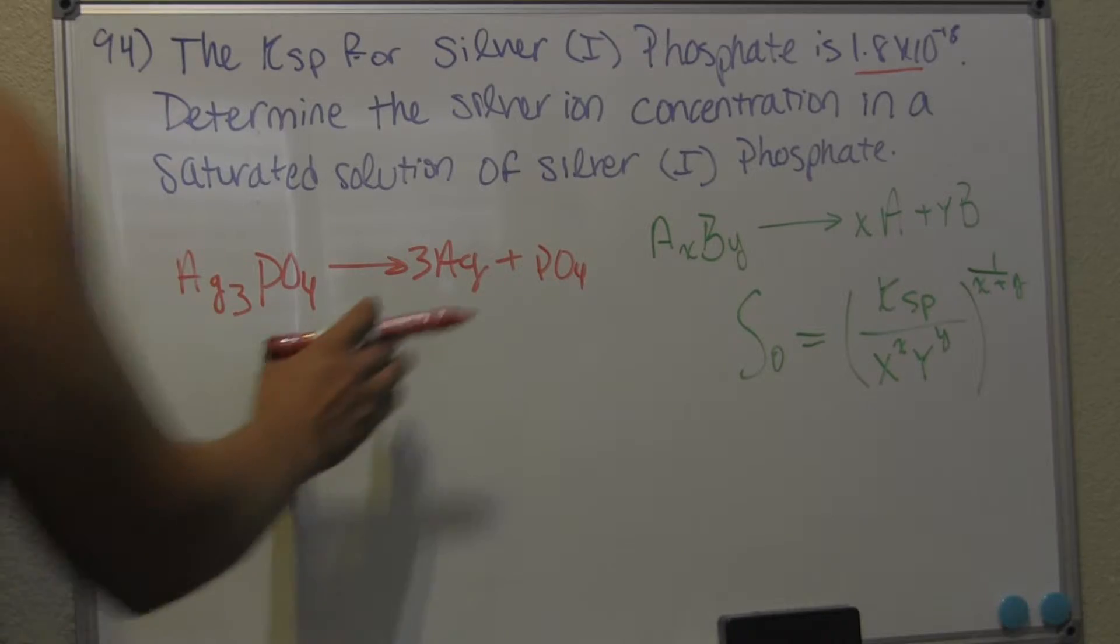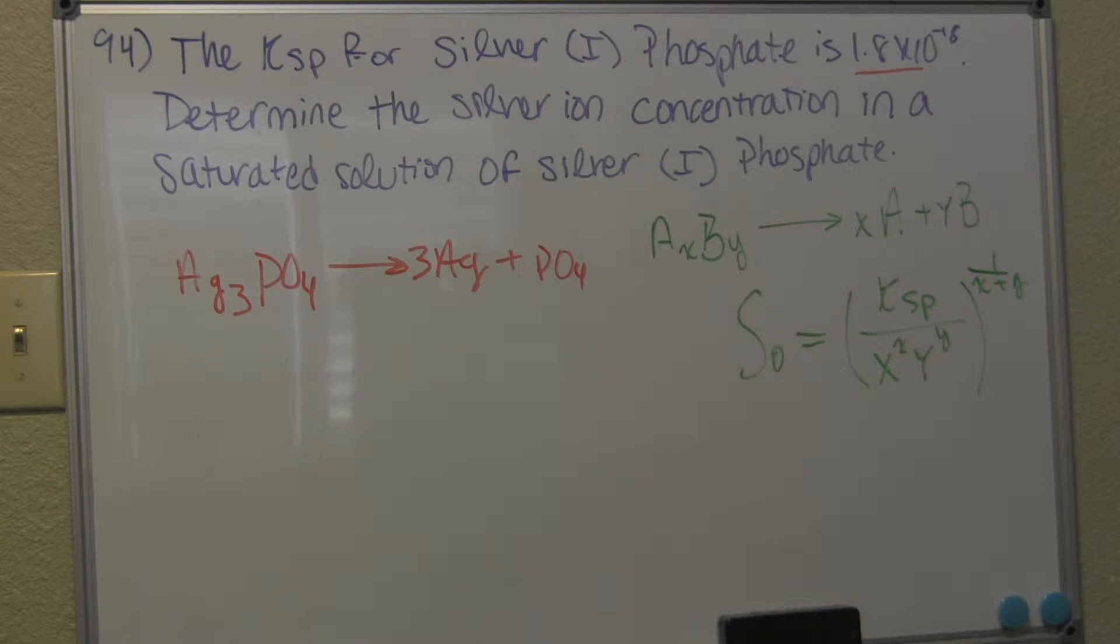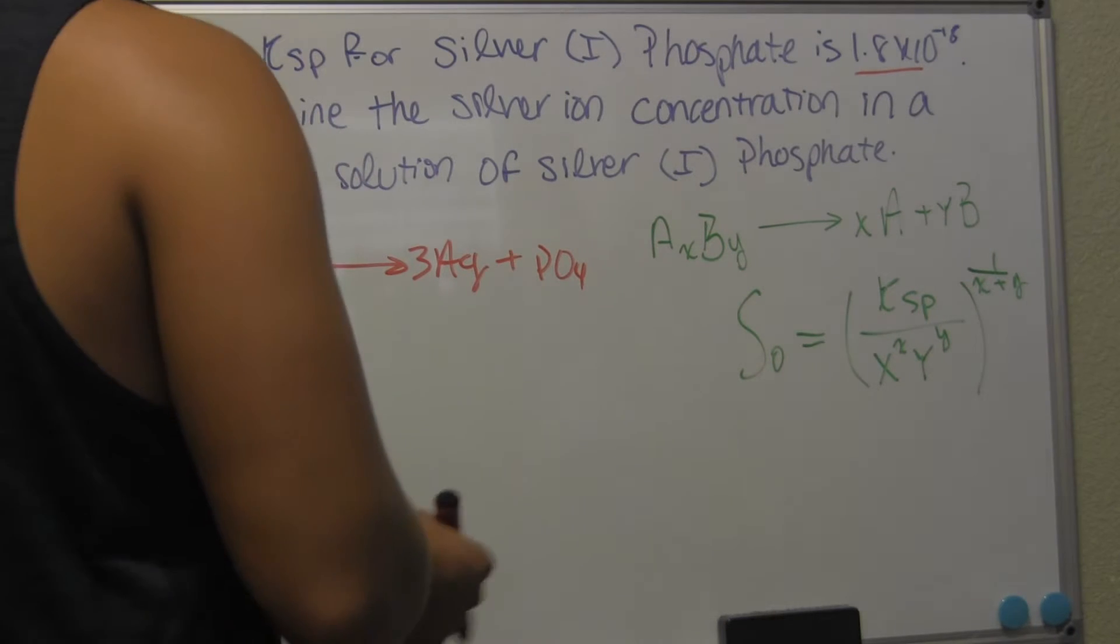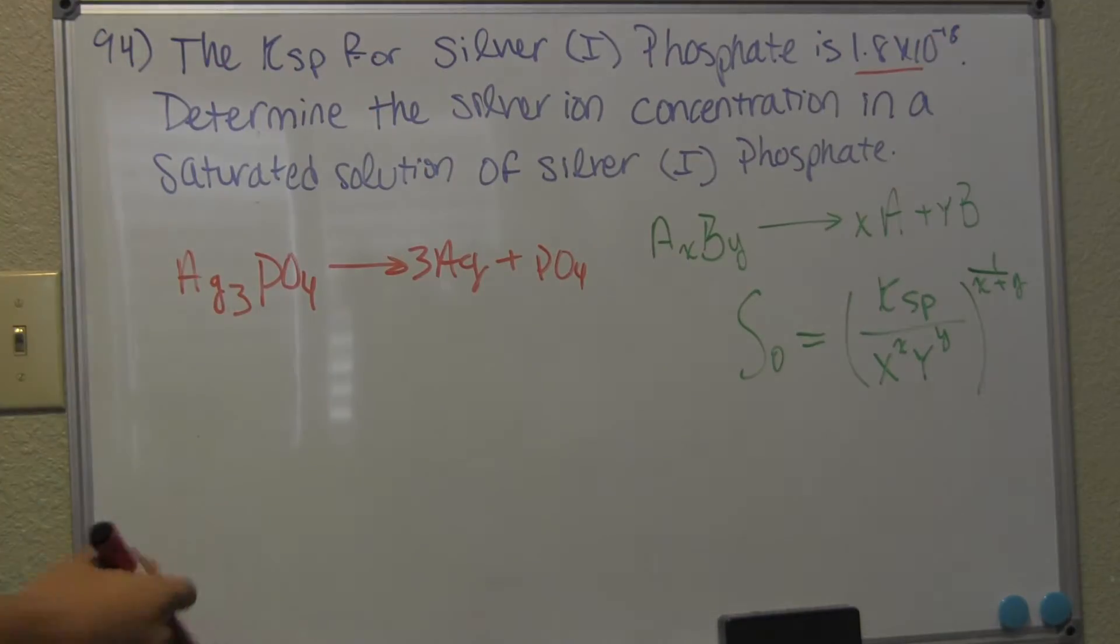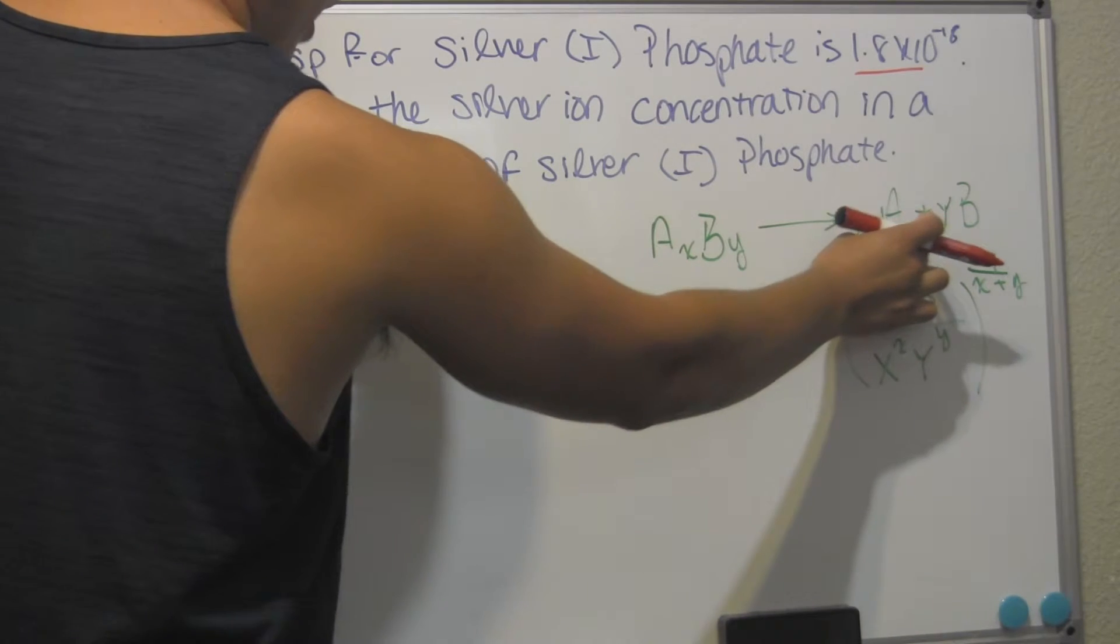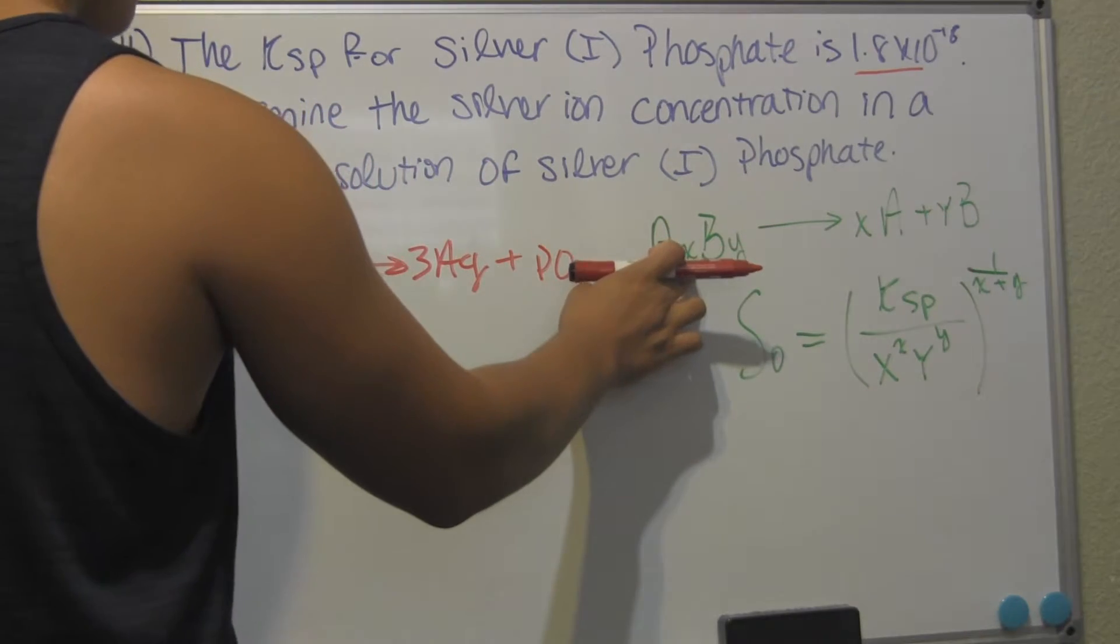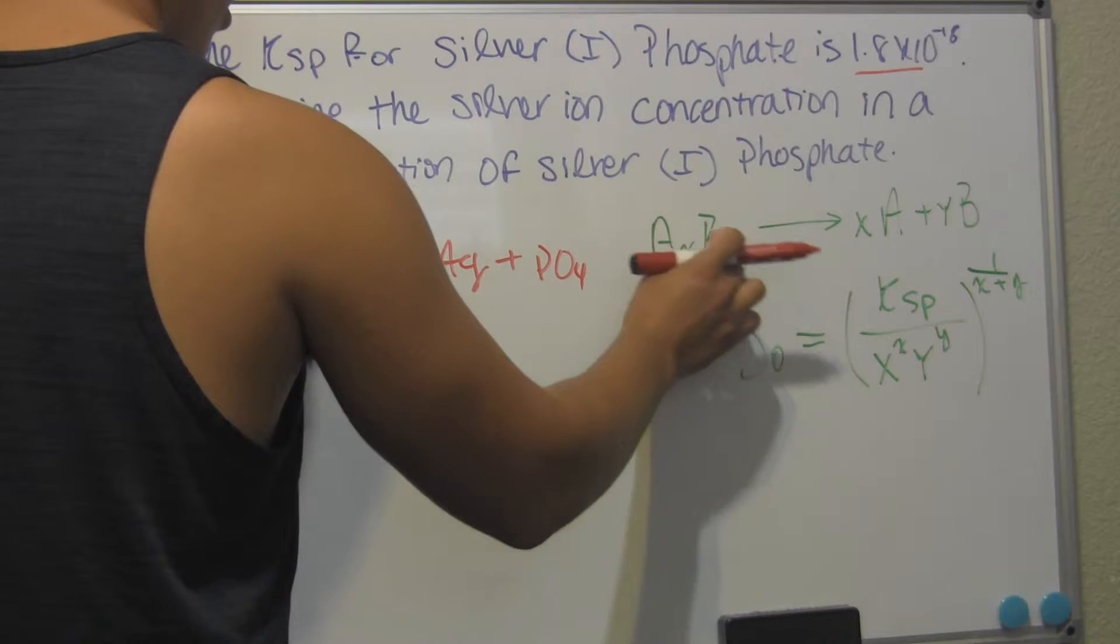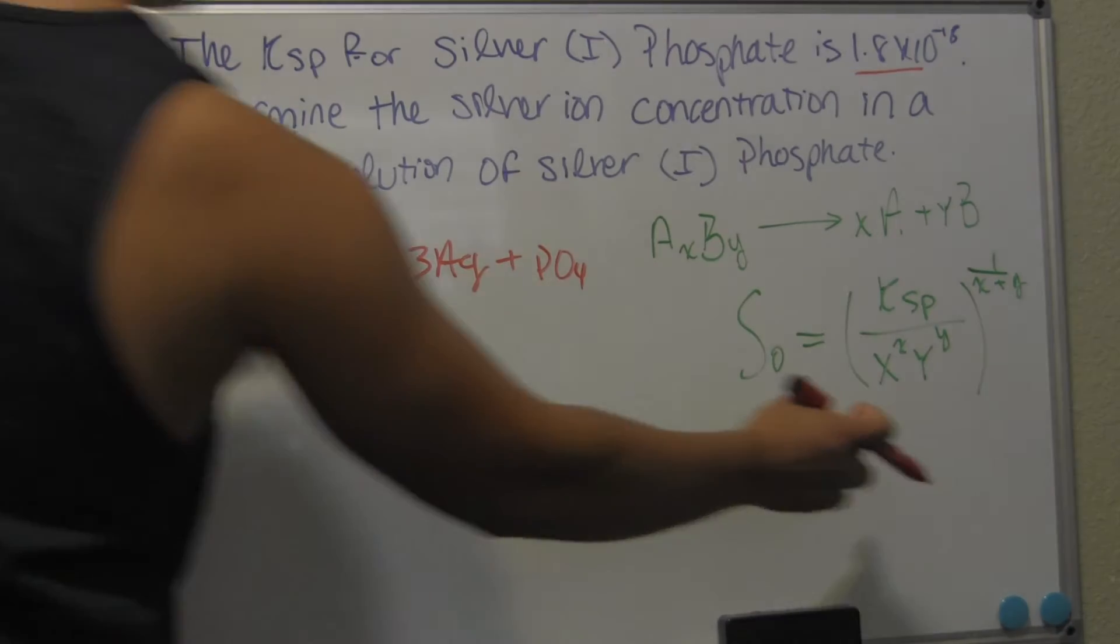So we're going to be plugging in these values into our molar solubility equation to find the molar solubility. And just to kind of show you guys how to do it a little bit before I actually get into it. So it's going to be Ksp, which is given right here, over the coefficient on the reactant side raised to the subscript on the reactant side of the same compound. So A subscript X. You're going to be raising that to that.